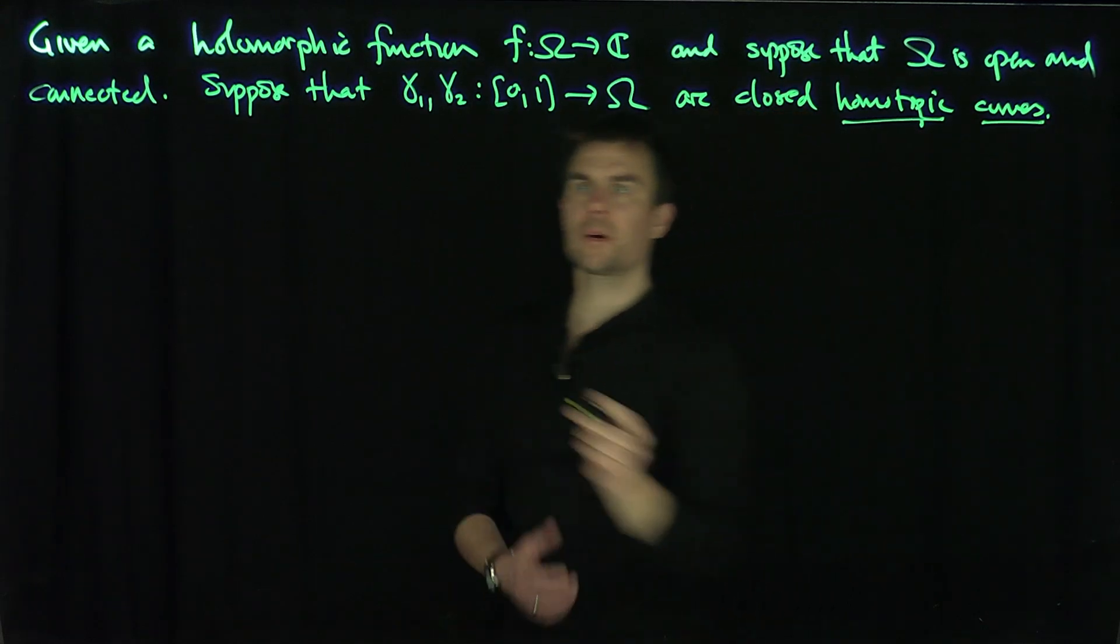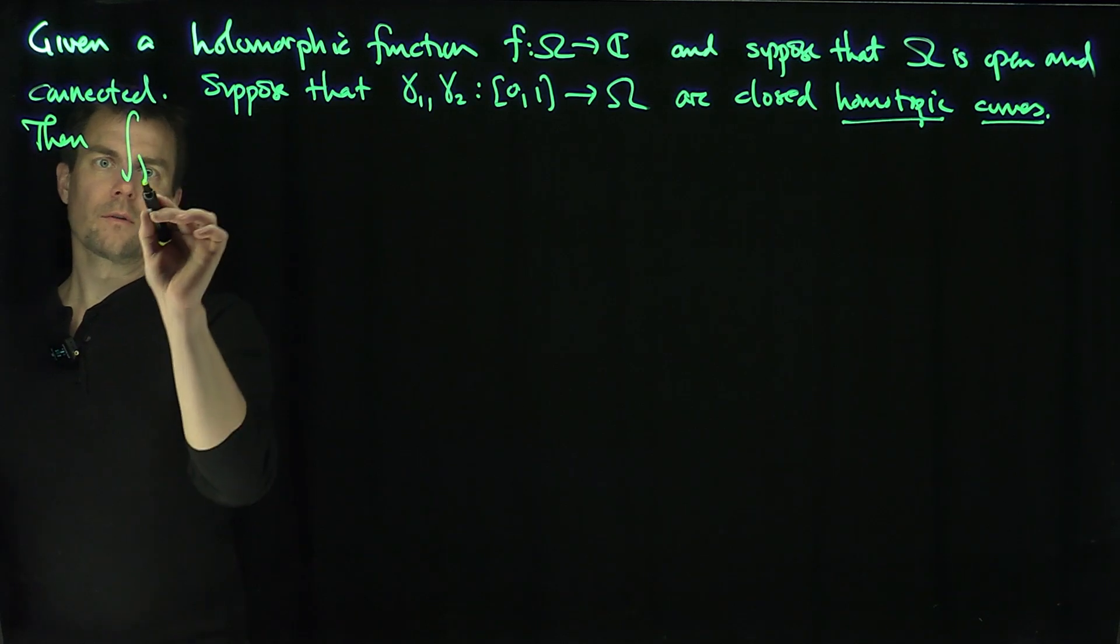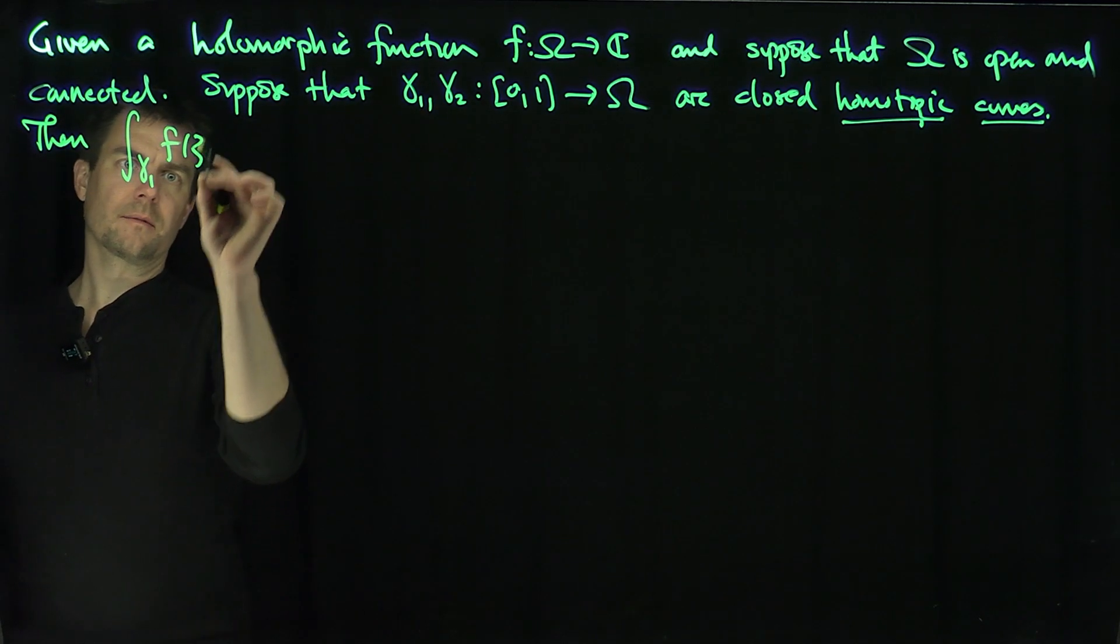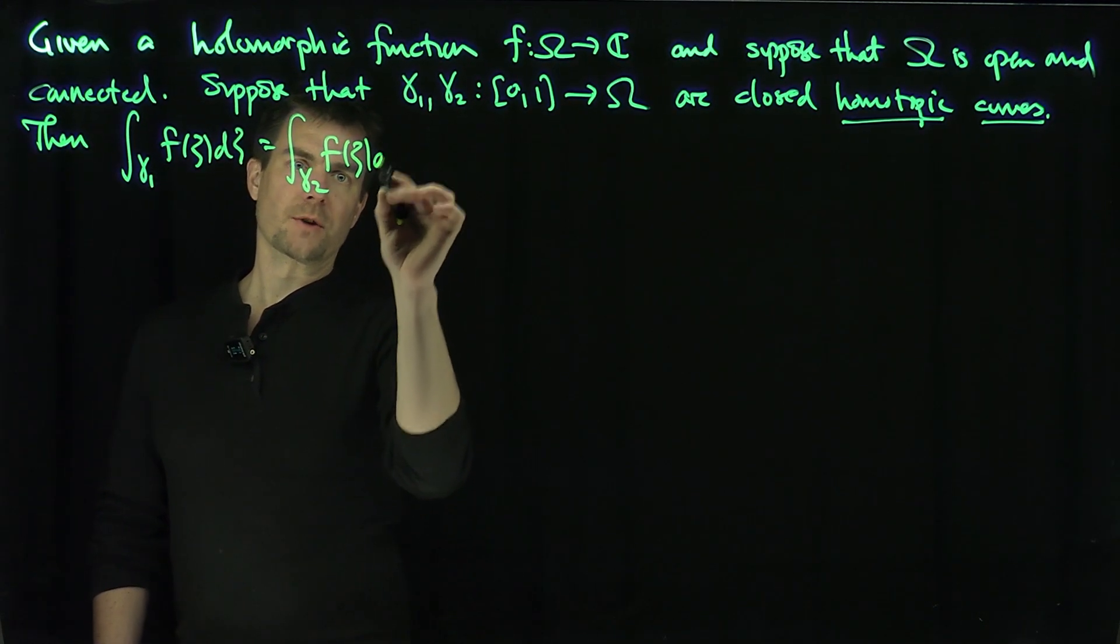They're homotopic. Then, the integral over gamma1 of F of zeta d zeta is equal to the integral over gamma2 of F of zeta d zeta. That's Cauchy's theorem.